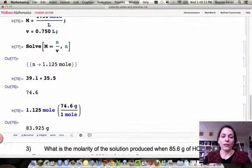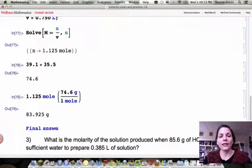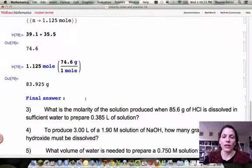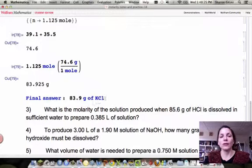So for every 74.6 grams of potassium chloride, we know that is equal to 1 mole. And voila, our final answer. Well, let's round it to correct significant digits. Our original problem has 3 and 3, so our answer should be 3. 83.9 grams of potassium chloride is needed to make your solution.